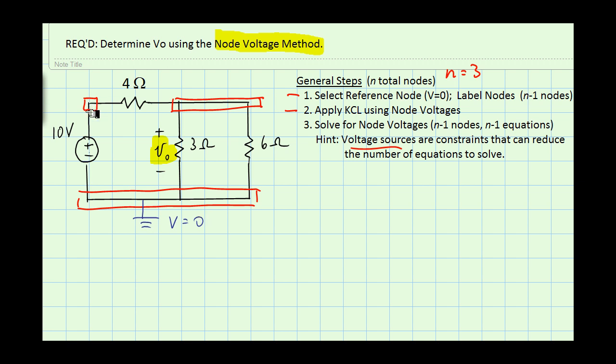I will label the node above the 10 volt source as VA, but notice that the voltage source all it does is increase the voltage from the bottom to the top of itself, so VA is actually 10 volts. This is an example of how I can reduce the number of equations or unknown node voltages that I have, because I know that the voltage between the bottom node and the reference node and VA has got to be 10 volts.